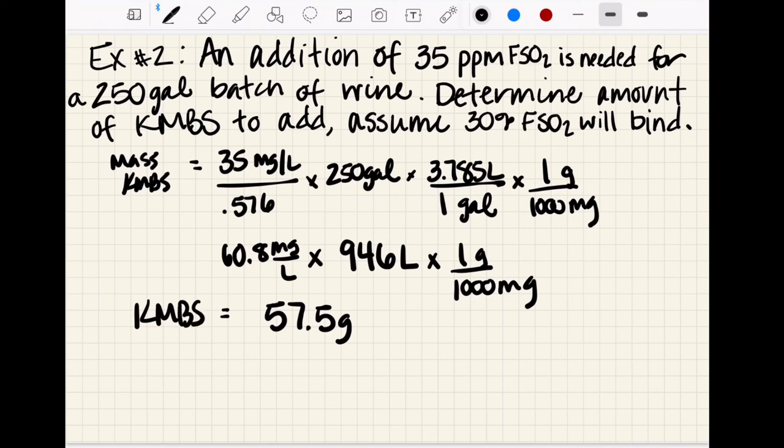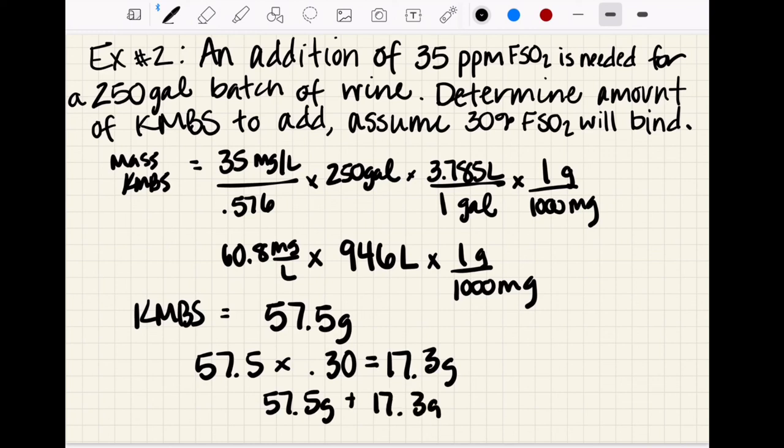But we also need to assume that 30 percent will bind. So if we make that assumption, we're going to times 57.5 by 0.3 and that gives us 17.3 grams. 57.5 grams plus 17.3 grams gives us a total addition of 74.8 grams KMBS to add.